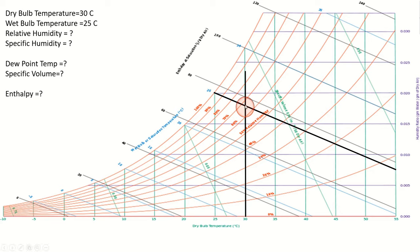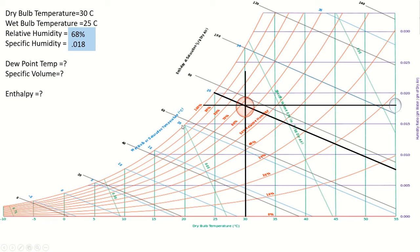For relative humidity: the intersection point falls between the 60% and 70% humidity lines, nearest to 70%, so relative humidity is around 68%. For specific humidity: drawing a horizontal line to the humidity ratio scale, the value is between 0.015 and 0.020, nearest to 0.020, so specific humidity is approximately 0.018. For dew point temperature: drawing a horizontal line from the intersection point to the saturation curve, the value is between 20 and 25, approximately 23.5°C.